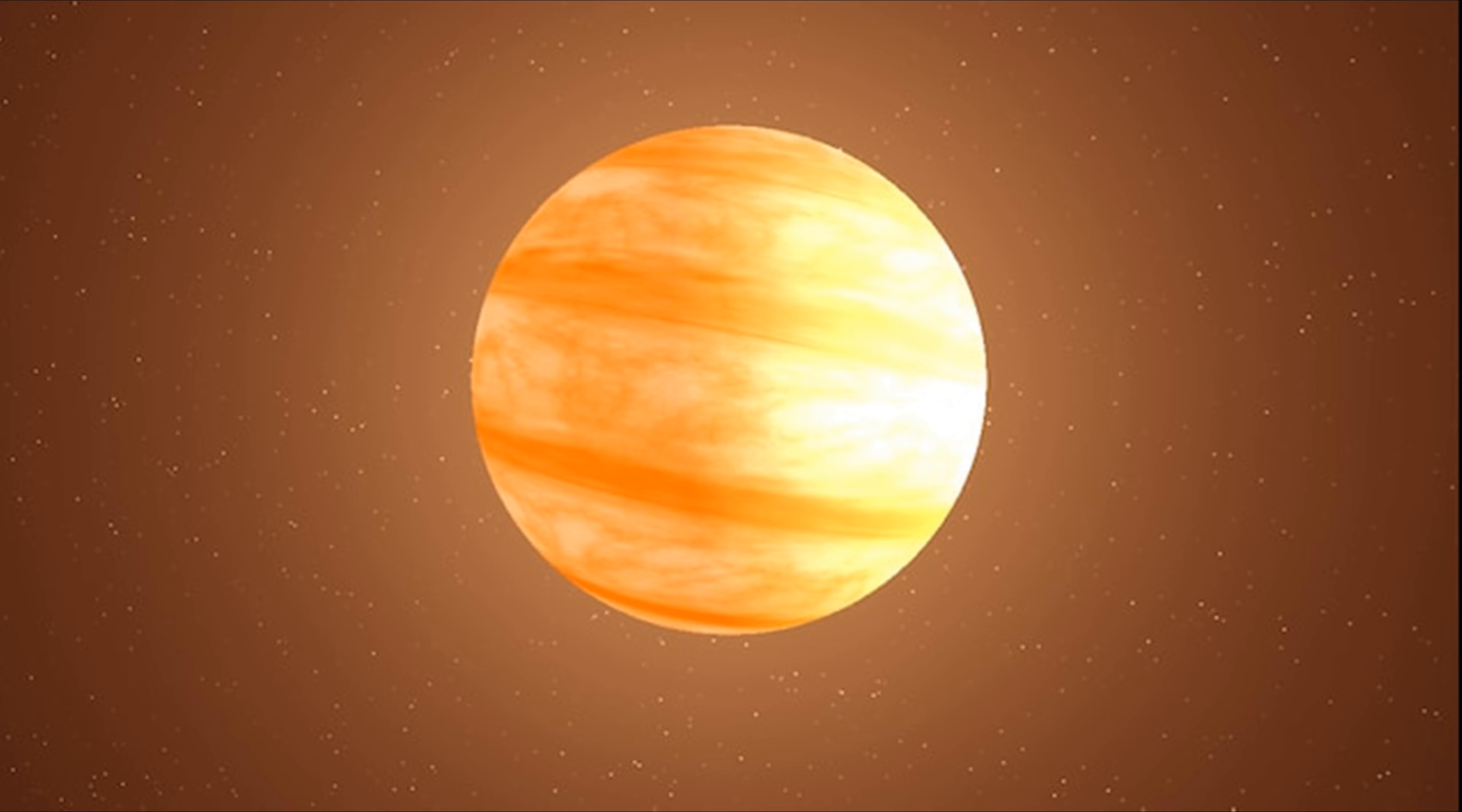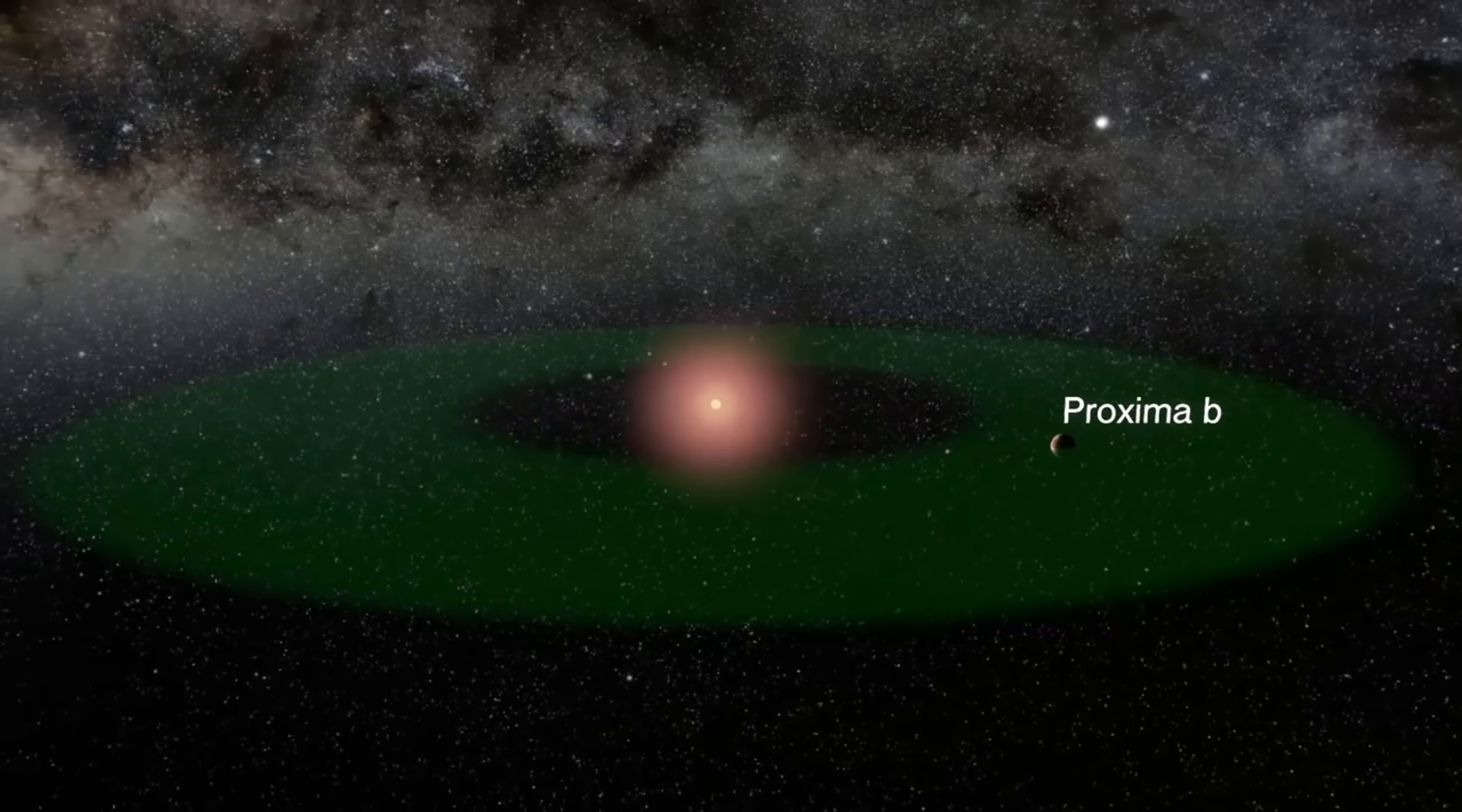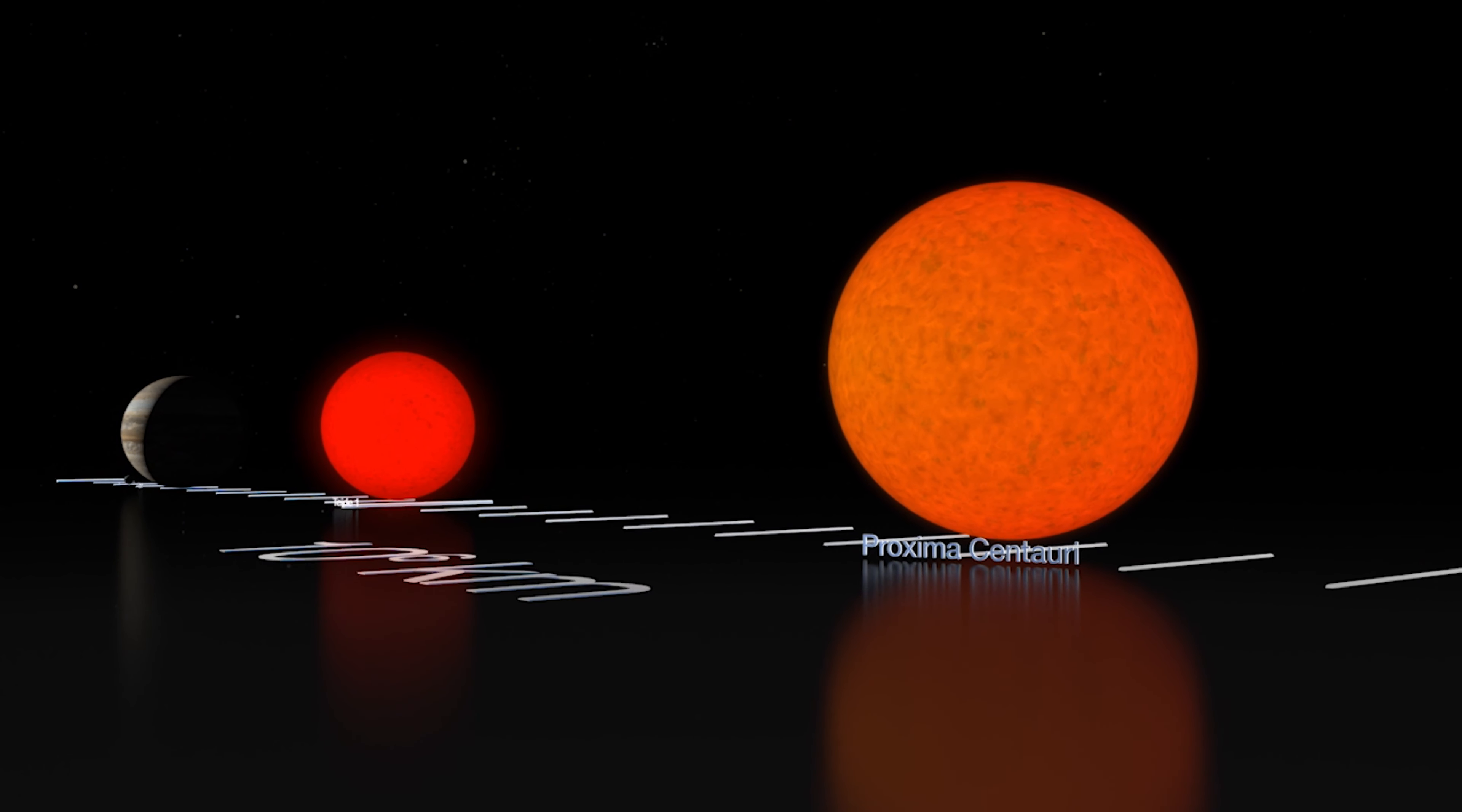A red dwarf known as Proxima Centauri is found in the constellation Centaurus. Proxima is the star closest to the Sun, being just 4.244 light years away from Earth. The star has a radius of 0.1542 solar radii, or around a seventh of the Sun's radius, and a mass of only 0.1221 solar masses, or an eighth of the Sun's mass, or 129 times the mass of Jupiter.